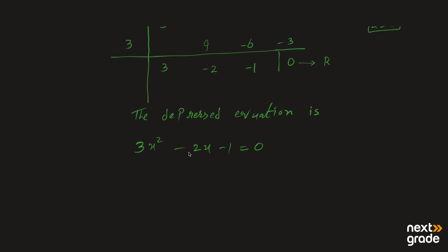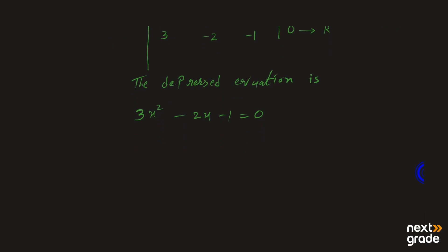Now this is a quadratic equation, so you can solve it by factorization method۔ ہم factorization apply کریں گے — 3 کو minus 1 سے multiply کریں تو minus 3 آئے، اور add کروائیں تو minus 2 آنا چاہیے۔ factors ہوں گے: 3x² minus 3x plus x minus 1۔ پھر common لیں گے: 3x(x minus 1) plus 1(x minus 1) is equal to 0، تو 3x common ہے اندر x minus 1 بچے گا۔